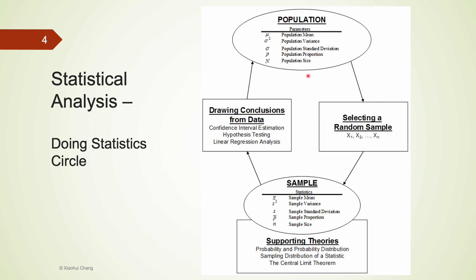Based on sample statistics, we can draw conclusions about population parameters. The supporting theories that allow us to do this include probability distribution, sampling distribution, and the central limit theorem. The tools to draw these inferences include confidence interval estimation, hypothesis testing, and linear regression analysis.